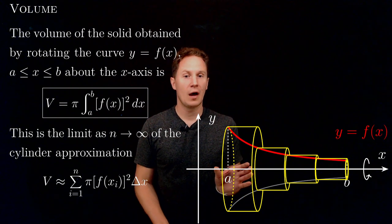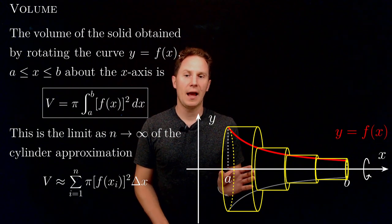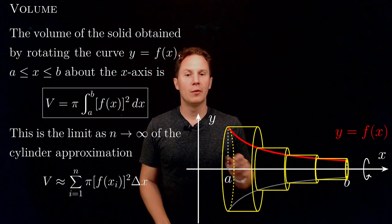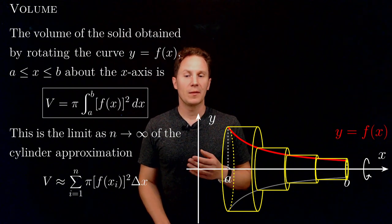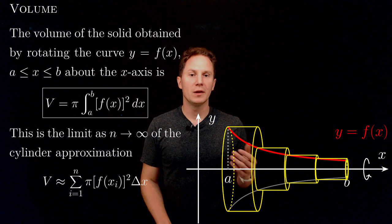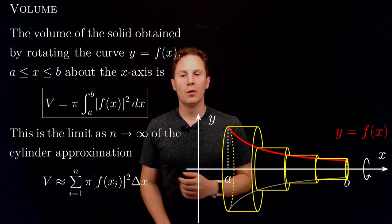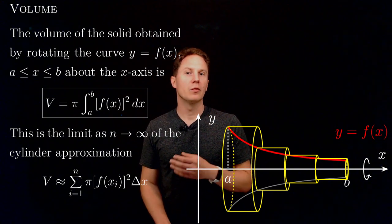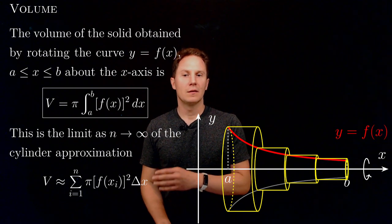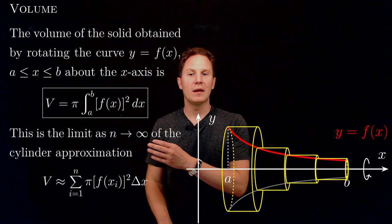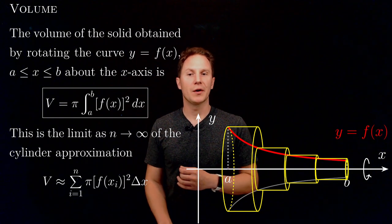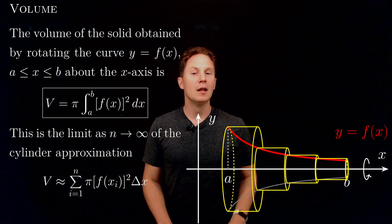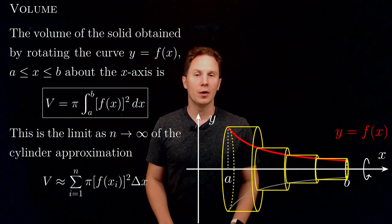And then for each subinterval we draw a cylinder that is approximating the volume of the solid of revolution. Each cylinder has a height of delta x and a radius that is f of xi for the ith cylinder. Therefore the volume is pi times f of xi squared times delta x. Adding these up, letting n go to infinity, therefore delta x go to zero.